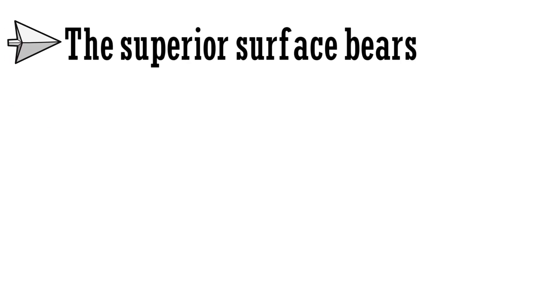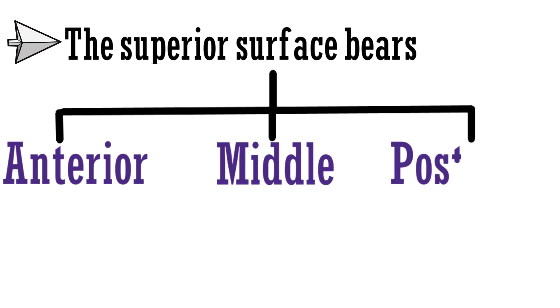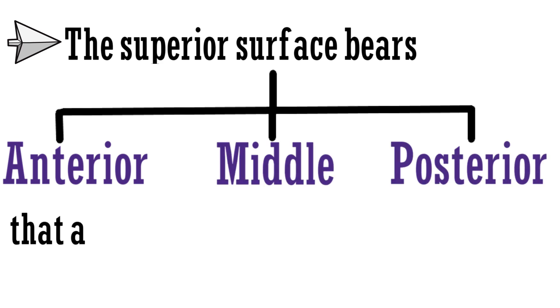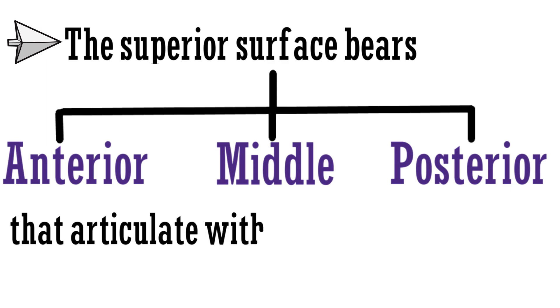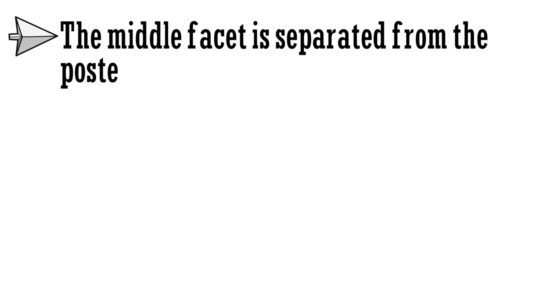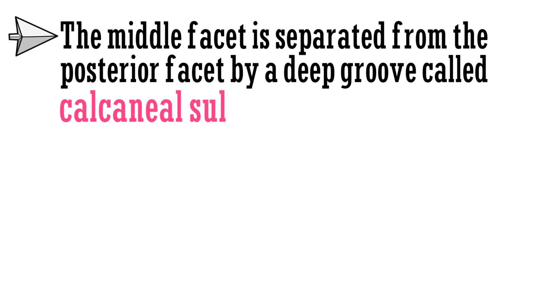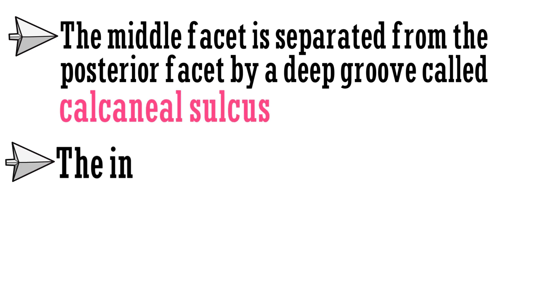The superior surface bears 3 talar articular facets — anterior, middle, and posterior — that articulate with the corresponding facets on the talus. The middle facet is separated from the posterior facet by a deep groove called the calcaneal sulcus. The inferior surface is rough.